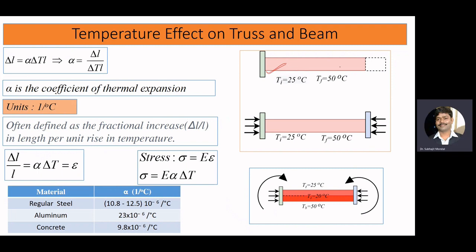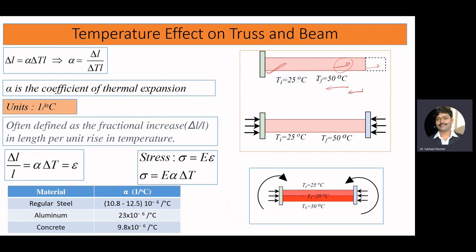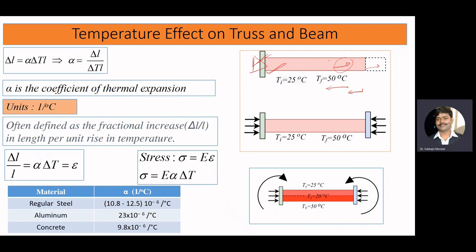We know that when there is a temperature change, the material is going to expand or shrink. If the temperature rises, the material will elongate, and when the temperature cools down, the material will shorten. Now, when we think of a civil engineering structure — for example, a member subjected to a uniform temperature rise — the material is going to expand. If there is no support on either side, we observe that there is no stress in the material. When we have a free end, there is no stress induced.